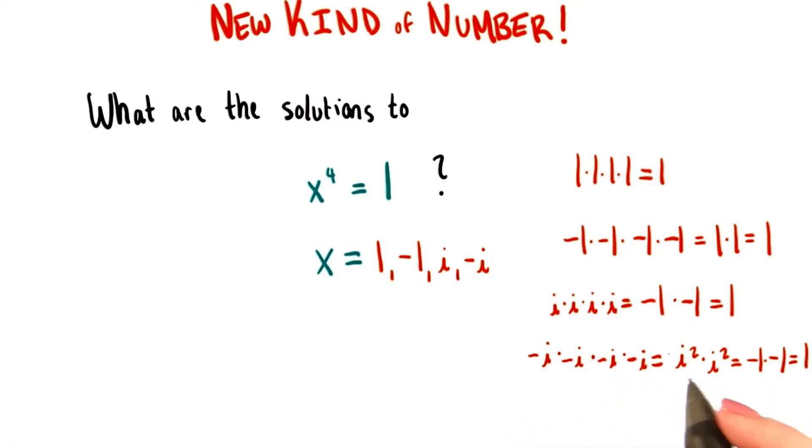So negative i times negative i is just i squared, which is negative 1. So negative i to the fourth is really just negative 1 squared, or 1.